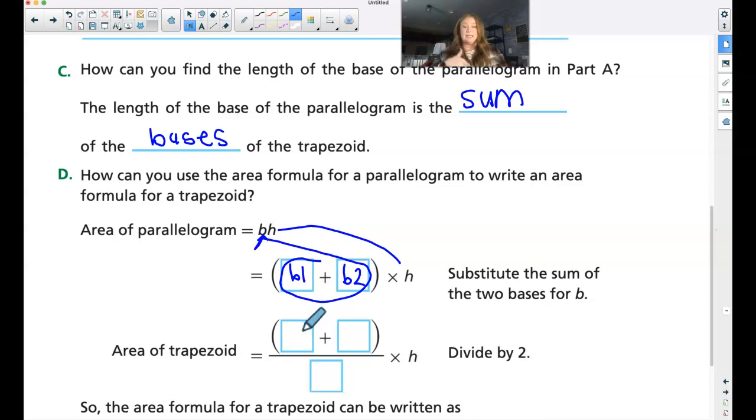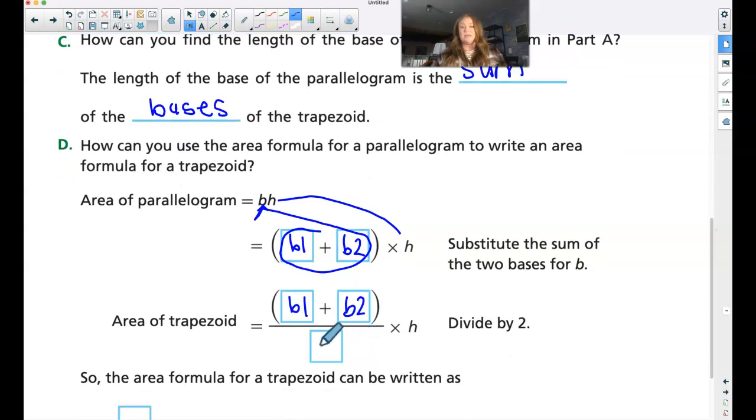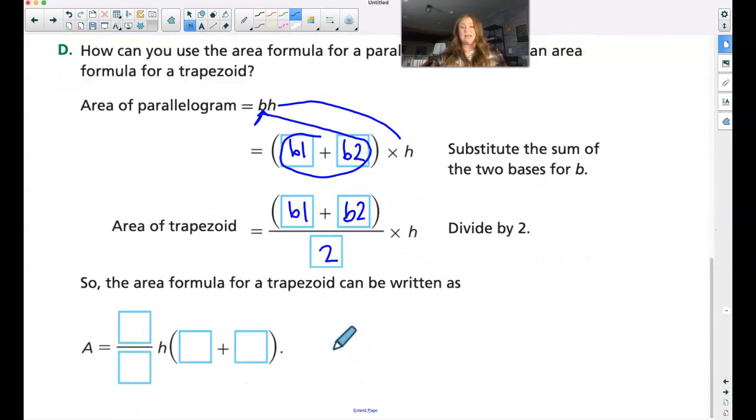So we take base one, we add on base two, and then we cut it in half. So another way we can write that is one half of the height times base one plus base two.